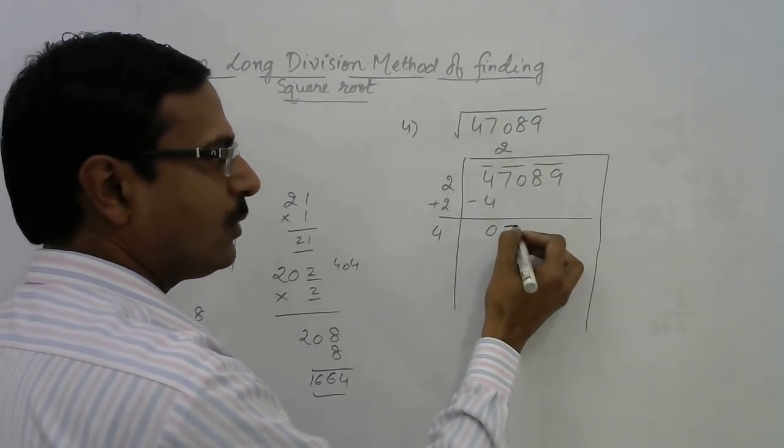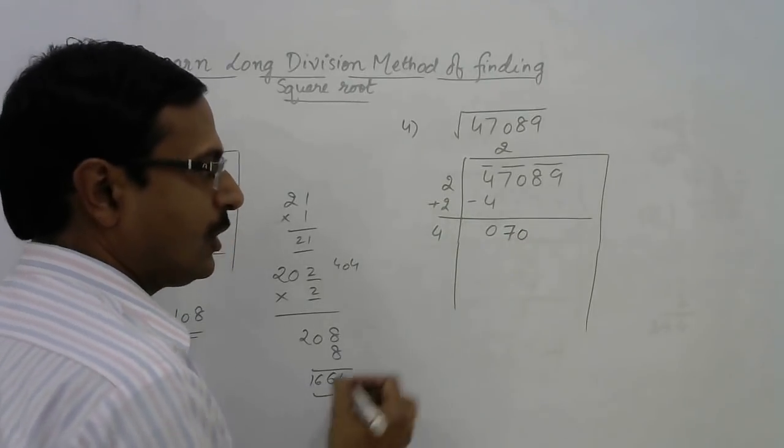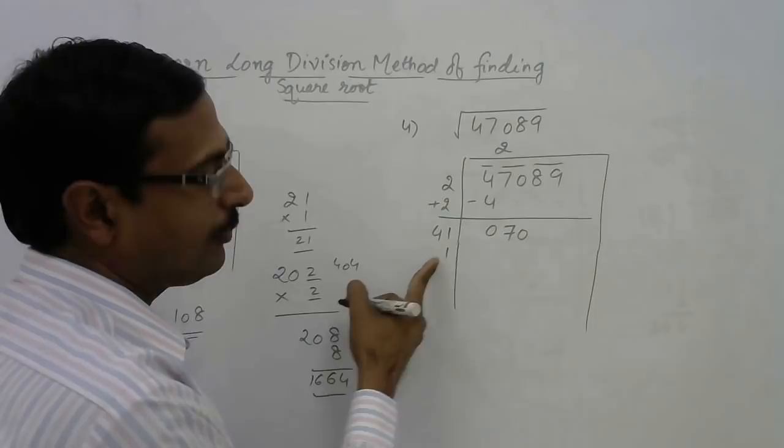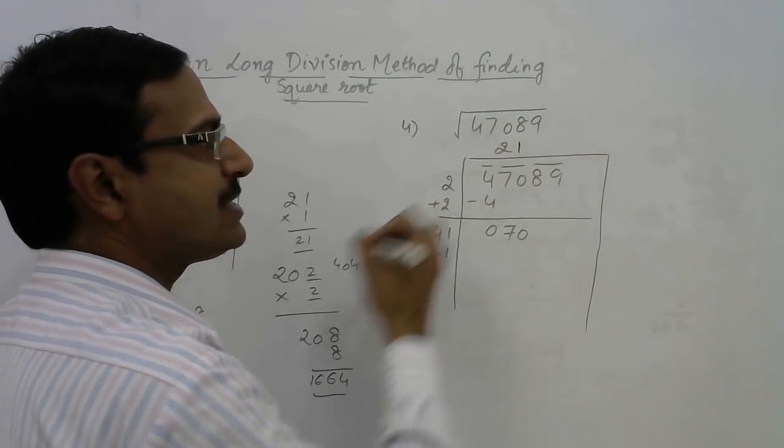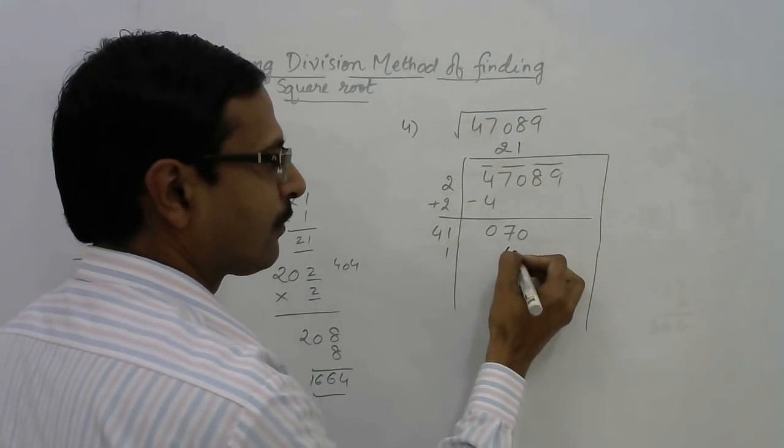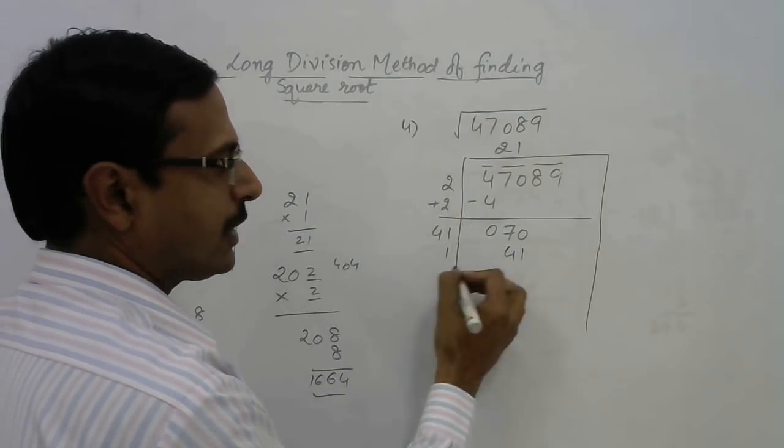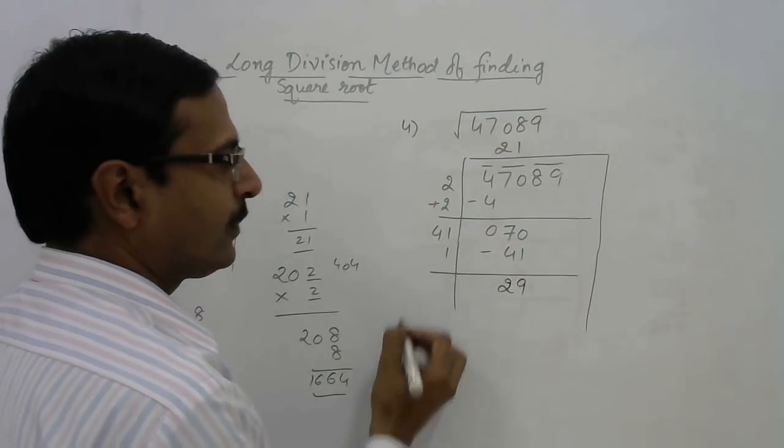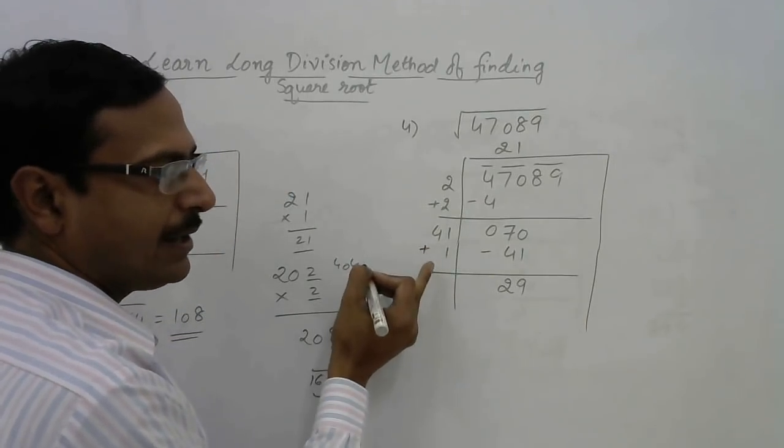Bring 70 down. 41 into 1 is 41, but 42 into 2 will be more than 70. So 41 into 1 means 1 comes here. 41 into 1 is 41. Subtract here, you get 29, and add here—you have to add here always. 41 plus 1 is 42.